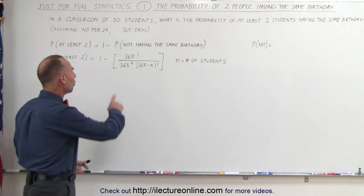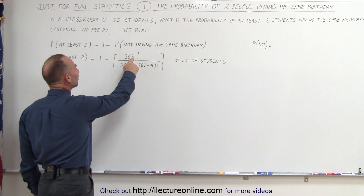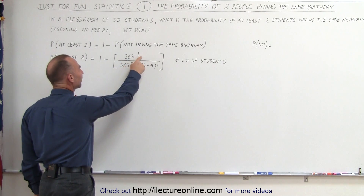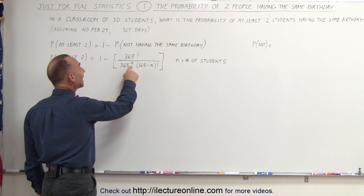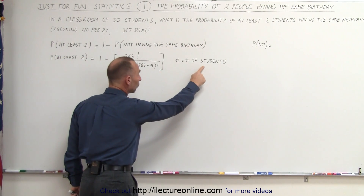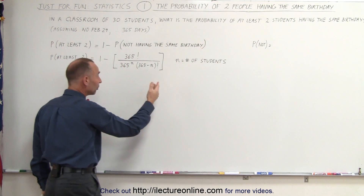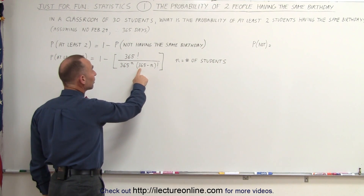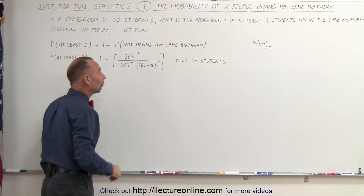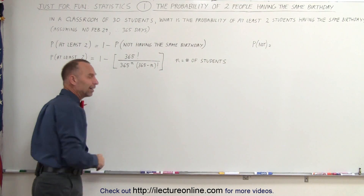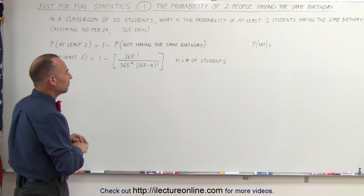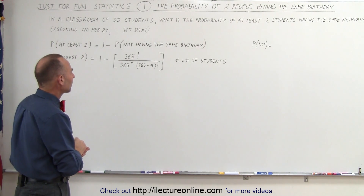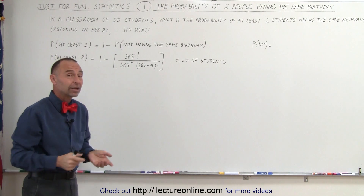The equation is 1 minus 365 factorial divided by 365 to the n power — n being the number of students in the room, in this case 30 — divided by 365 minus n factorial. You may wonder why that is the correct equation and where it came from.